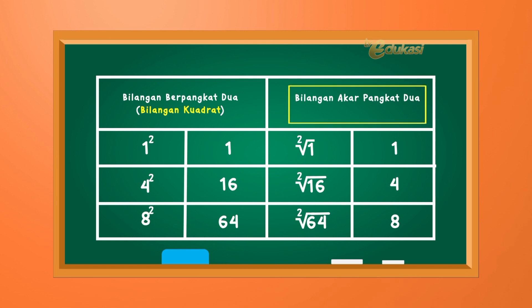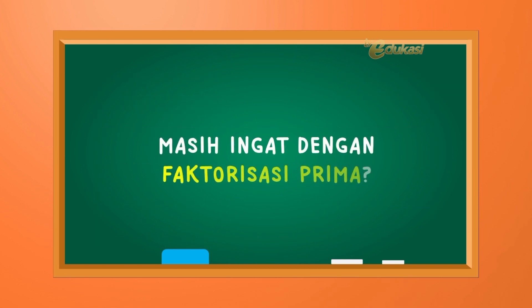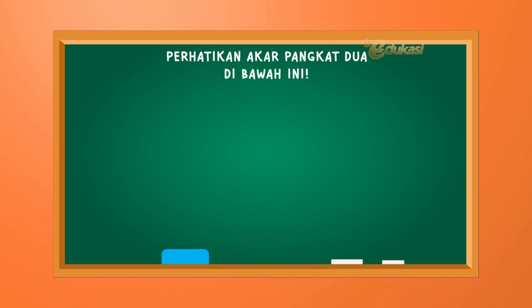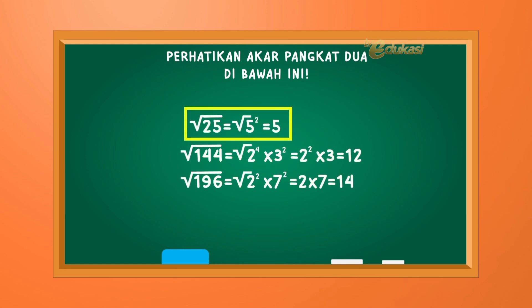Coba lihat. Bilangan akar pangkat dua: akar satu kuadrat sama dengan satu. Akar pangkat dua dari enam belas sama dengan empat. Akar pangkat dua dari enam puluh empat sama dengan delapan. Anak-anak, masih ingat dengan faktorisasi prima? Perhatikan akar pangkat dua di bawah ini: akar pangkat dua dari dua puluh lima sama dengan akar pangkat dua dari lima kuadrat sama dengan lima.